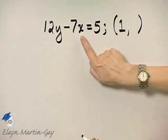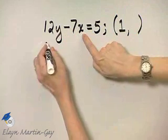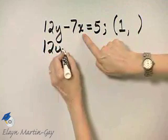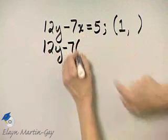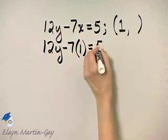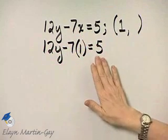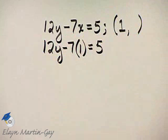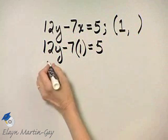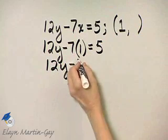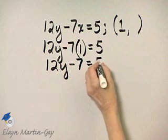So we will replace x with 1 and solve for y. So I have 12y minus 7 times x is 1 is equal to 5. Now notice the only unknown in this equation is y, so let's solve for y. I have 12y minus 7 times 1 is 7 is equal to 5.